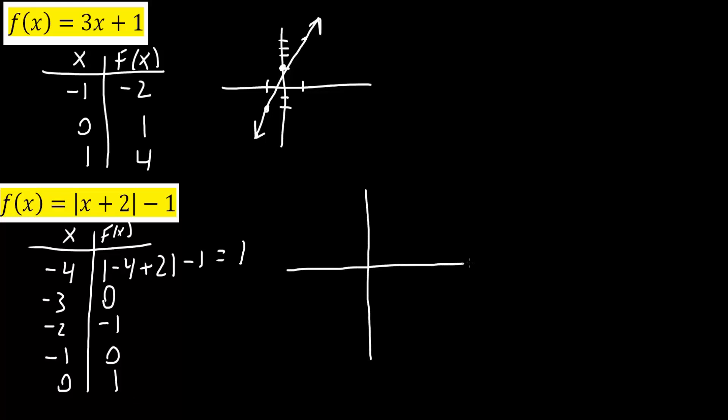So now we'll do a rough sketch. We have up to negative 4. So 1, 2, 3, 4. It goes from negative 1 all the way to 1. So negative 1 all the way to 1.